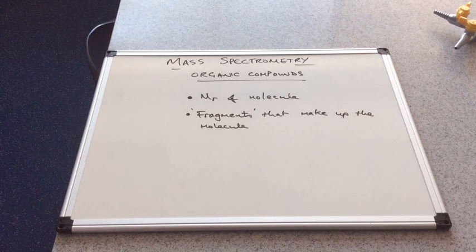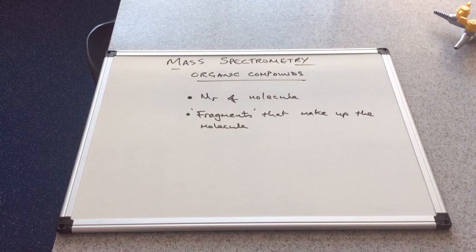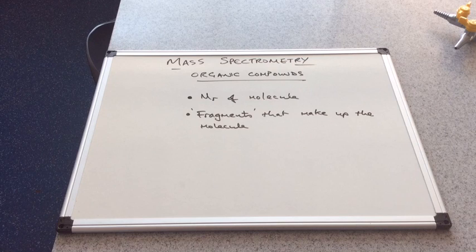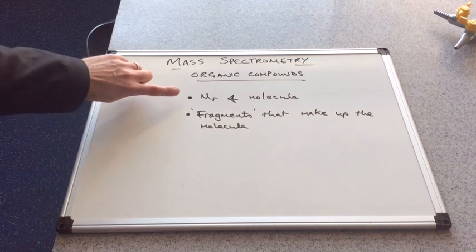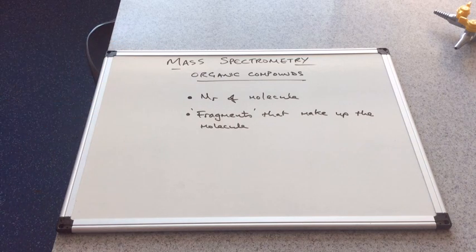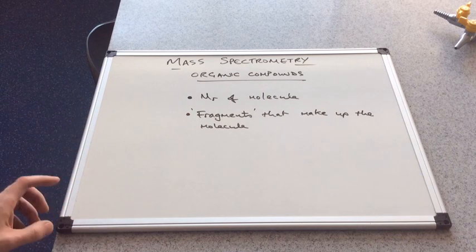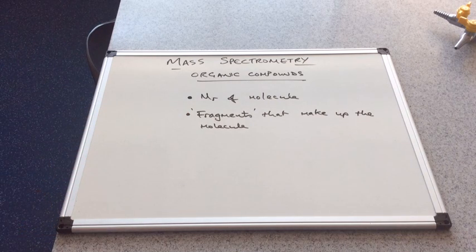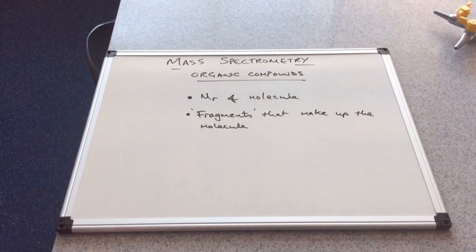This is the second mass spectrometry video, and this one's all about using mass spectrometry with organic compounds. If you run a mass spectrum of an organic compound, it's able to tell you two things about the molecule: the MR of the molecule, so what its mass is, and also fragments, little pieces that actually make up the whole molecule. We're going to look at how these two are possible from the spectrum.